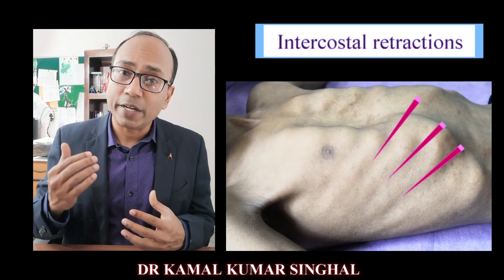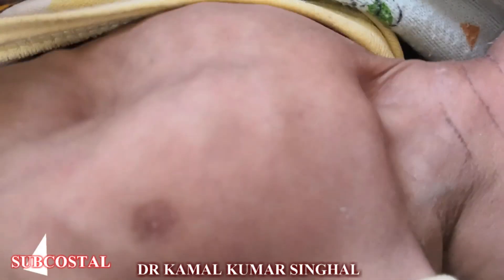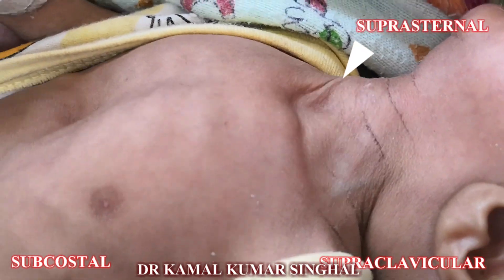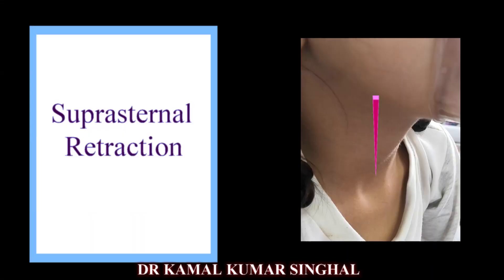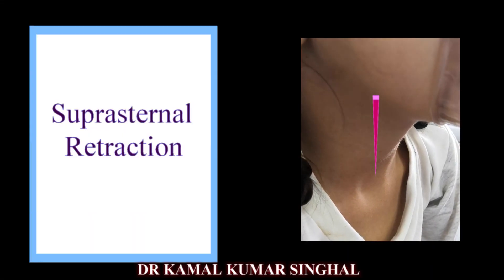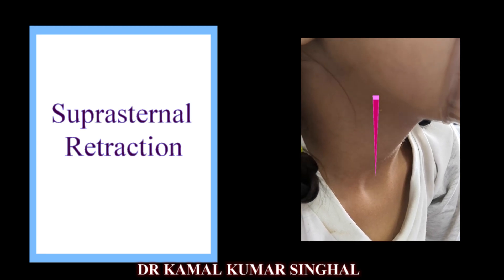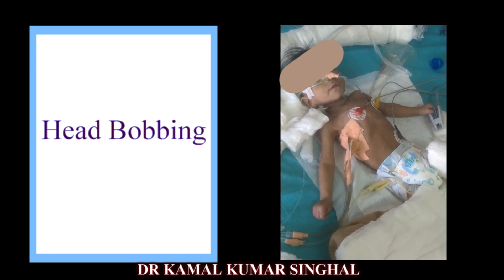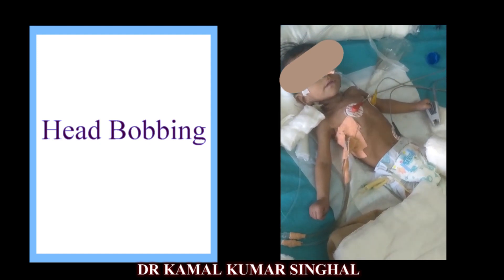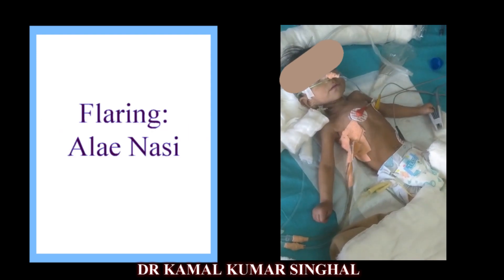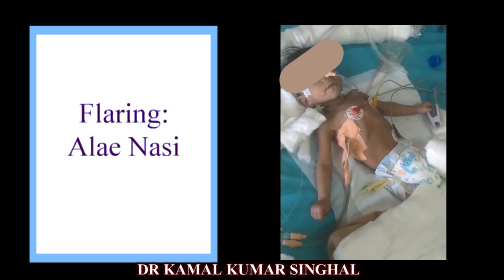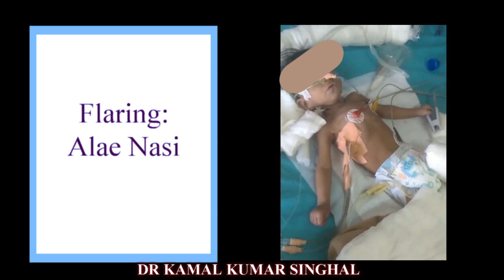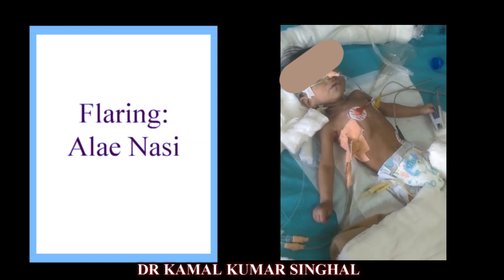Retractions can be intercostal, subcostal, supraclavicular, or suprasternal. Use of accessory muscles like contraction of the sternocleidomastoid muscle during inspiration also suggests increased respiratory effort. In small babies, this can also lead to head bobbing. Flaring of the alae nasi serves to increase the diameter of the airway and therefore decreases airway resistance in the upper airway and the total airway resistance.